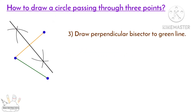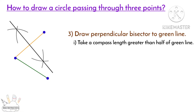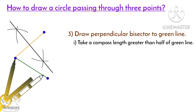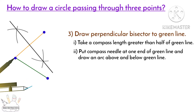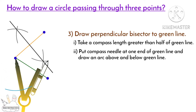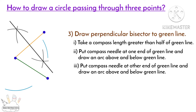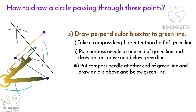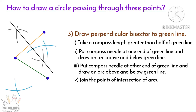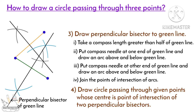Now draw the perpendicular bisector of the green line. Take a compass length greater than half of the green line. Put the compass needle at the two ends of the green line and draw arcs above and below it. Join the points of intersection of the arcs — this line is the perpendicular bisector of the green line.